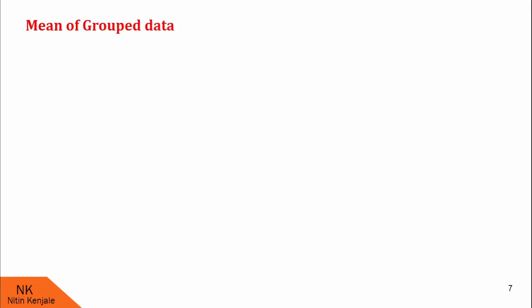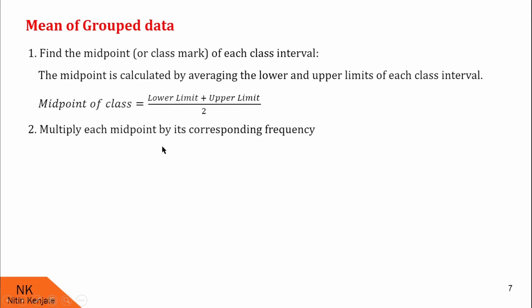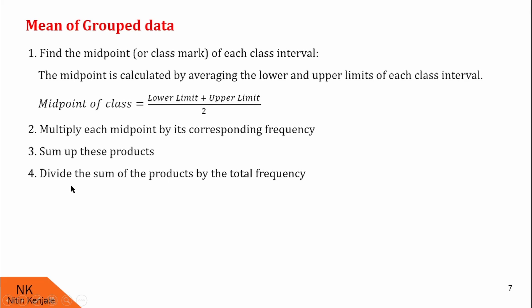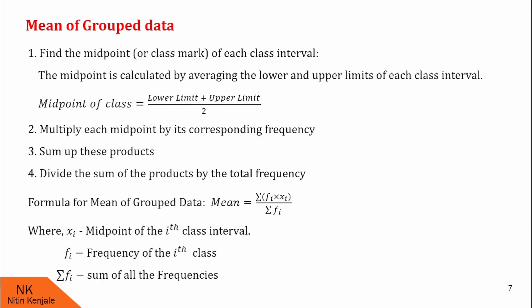Now let us see how to find the mean of grouped data. In step one, we find the midpoint of each class interval. The midpoint is calculated by averaging the lower and upper limits: midpoint = (lower limit + upper limit) / 2. Next, we multiply each midpoint by its corresponding frequency, then sum up all these products, and divide by the total frequency. So the formula for mean of grouped data is: mean = Σ(fᵢxᵢ) / Σfᵢ, where xᵢ denotes the midpoint of the ith class interval, fᵢ denotes the frequency of the ith class, and Σfᵢ is the sum of all frequencies.